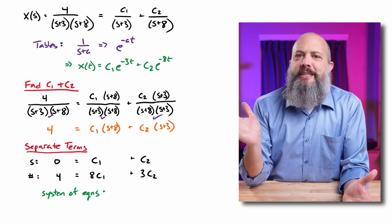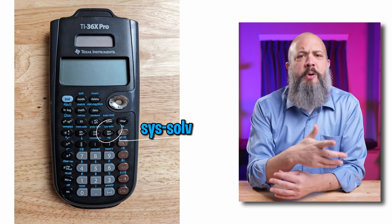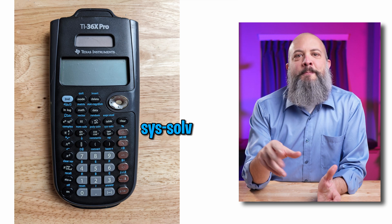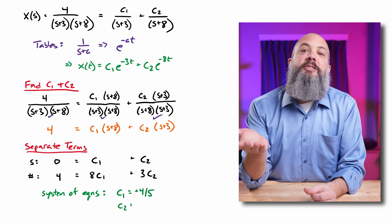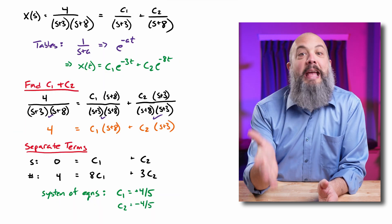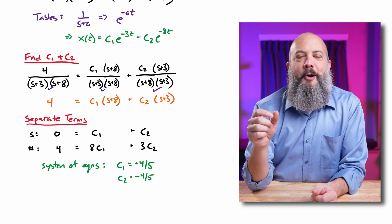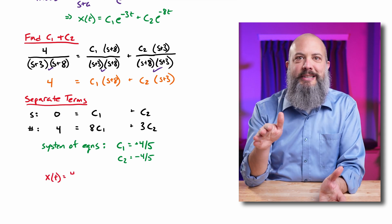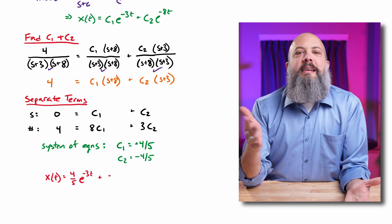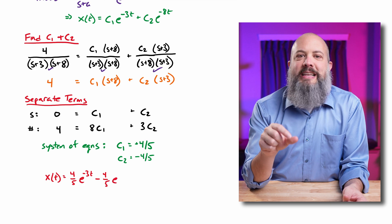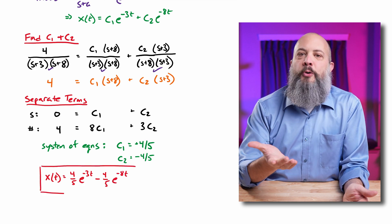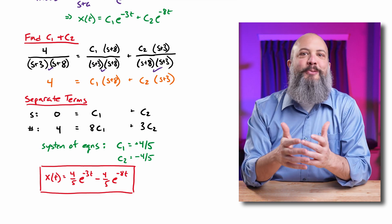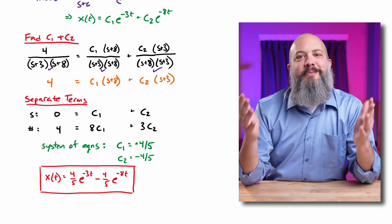This leaves a regular system of equations I can plug into a calculator — a TI-36X Pro or any calculator can handle two equations, two unknowns. Plugging in, I get c1 = positive four-fifths and c2 = negative four-fifths. Using the Laplace transform table result e^(−at), the final answer is x(t) = (4/5)e^(−3t) − (4/5)e^(−8t). That's the final answer for the time response of this system.